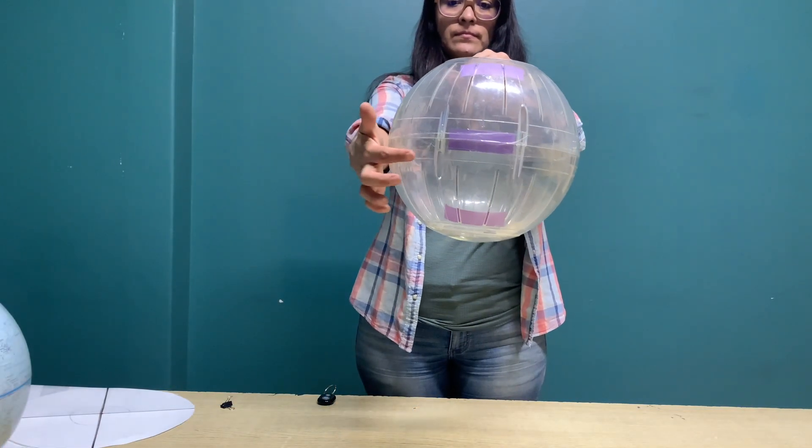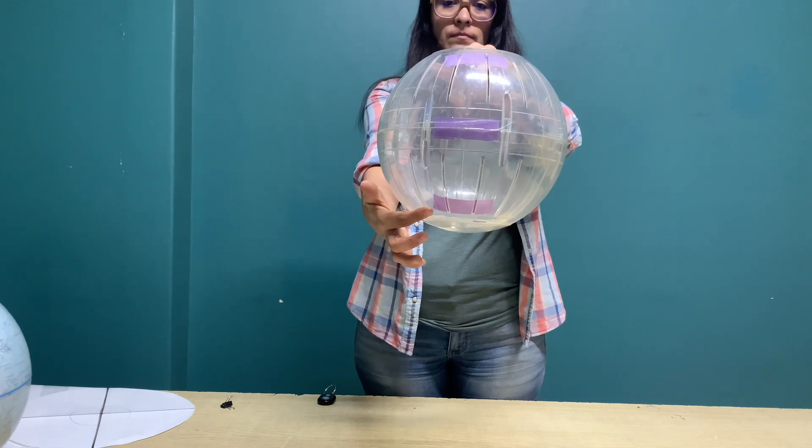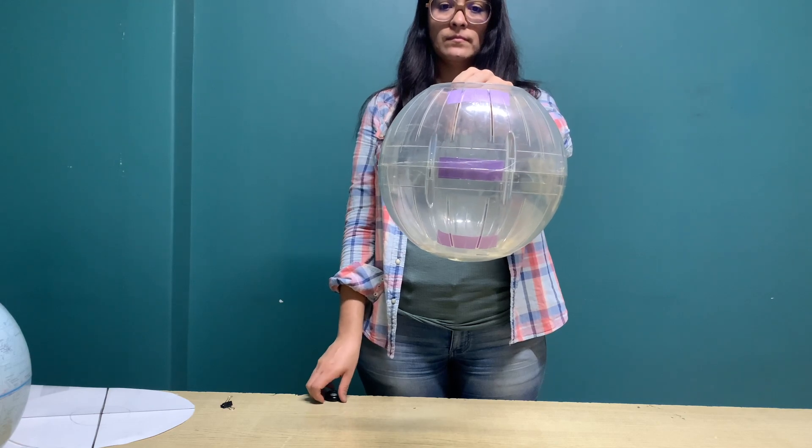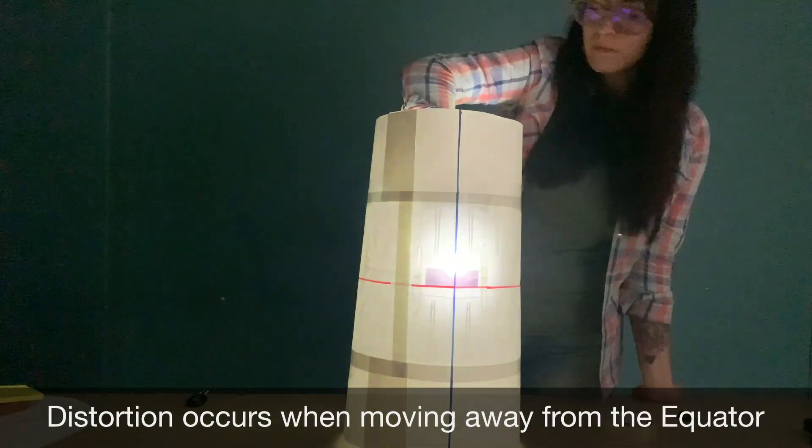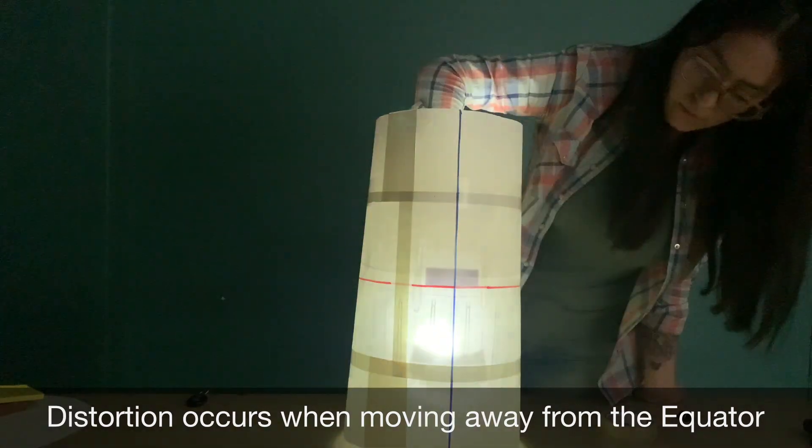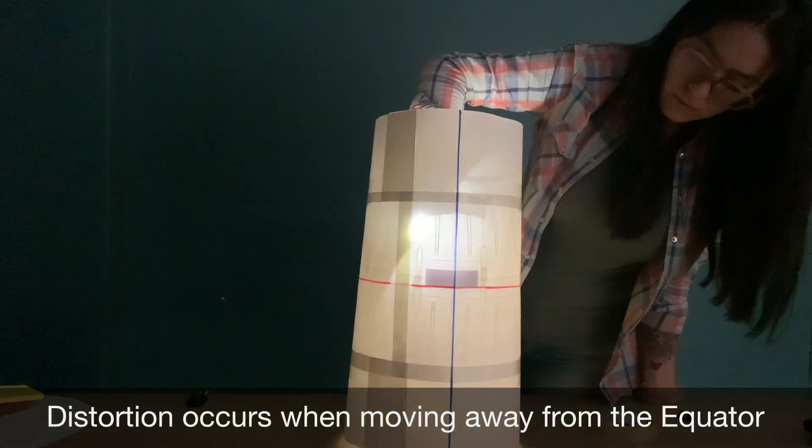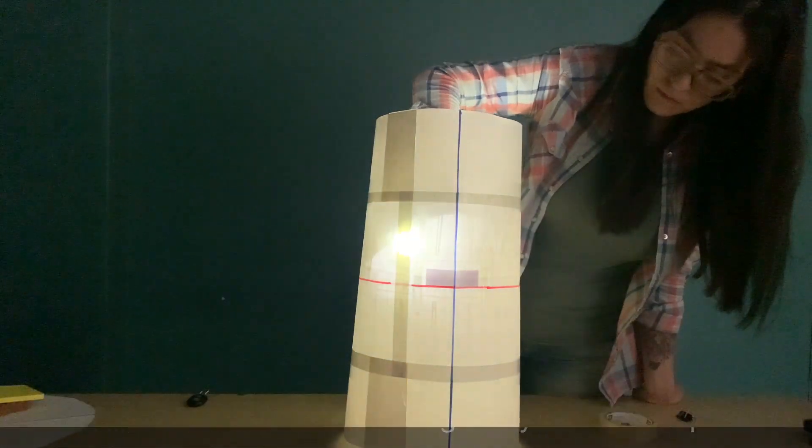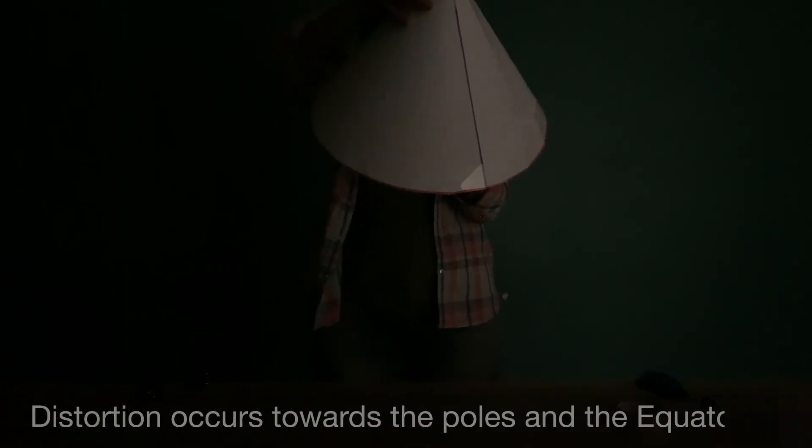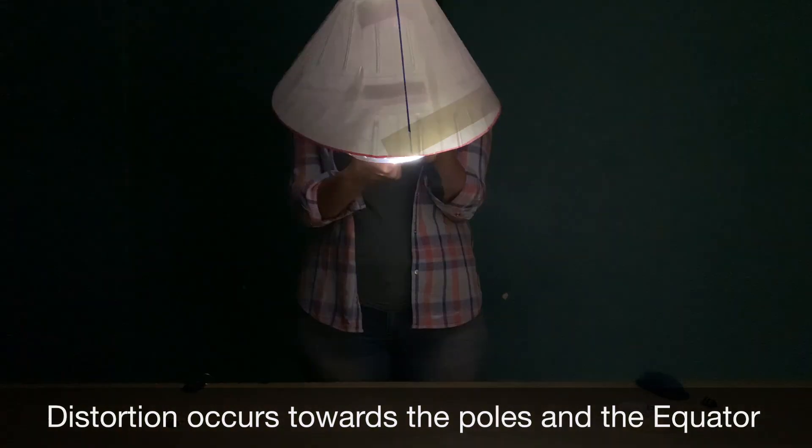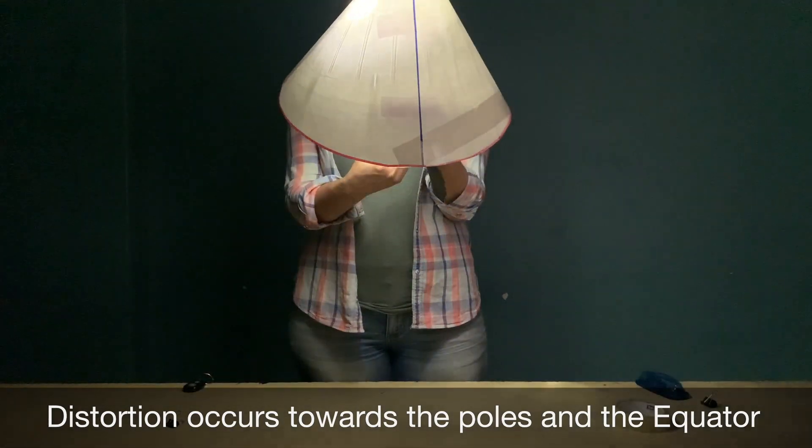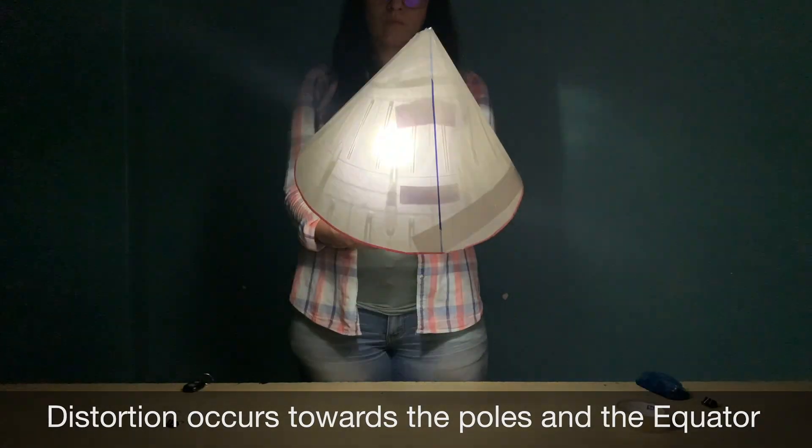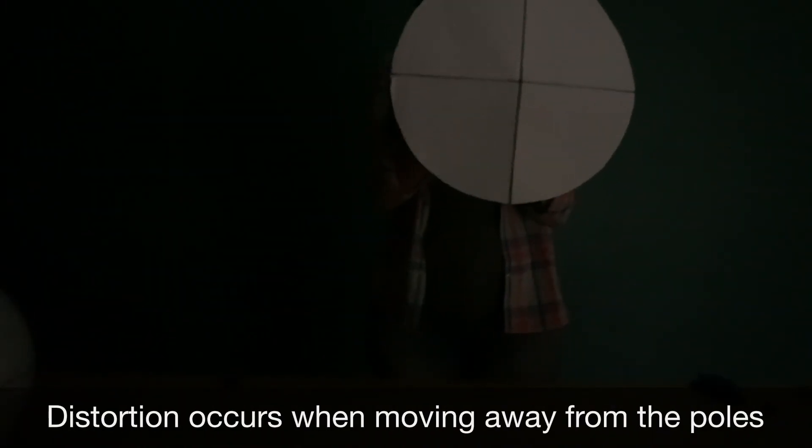One easy way to understand how map projections alter spatial properties is to visualize shining a light through the Earth onto a surface, called the projection surface. Imagine that the surface of the Earth, represented by a translucent sphere, has rectangles of the same size in the equatorial zone and close to the poles. If we wrap the Earth with a piece of paper and project a light from the center of it, the distorted shadow will be projected on the sheet of paper and thus we can see why the maps look so different from each other.